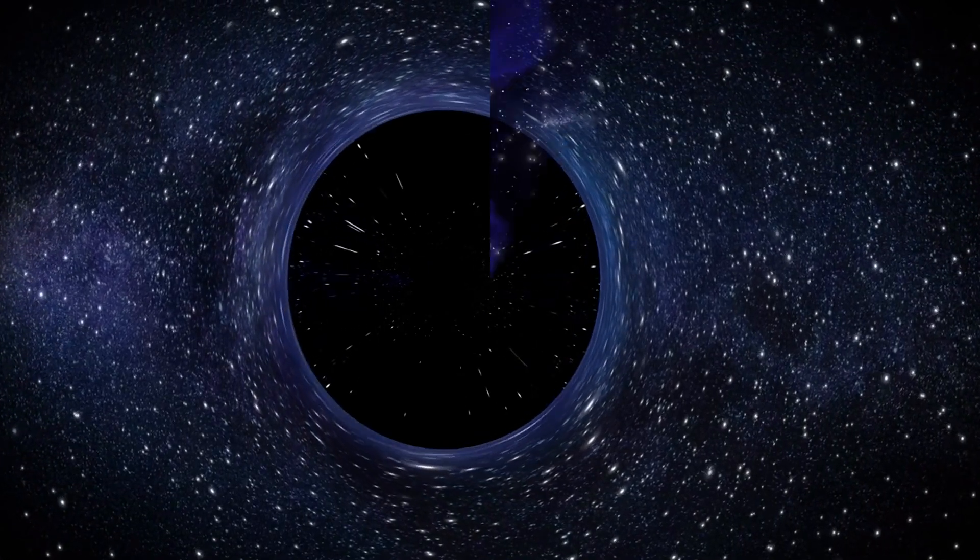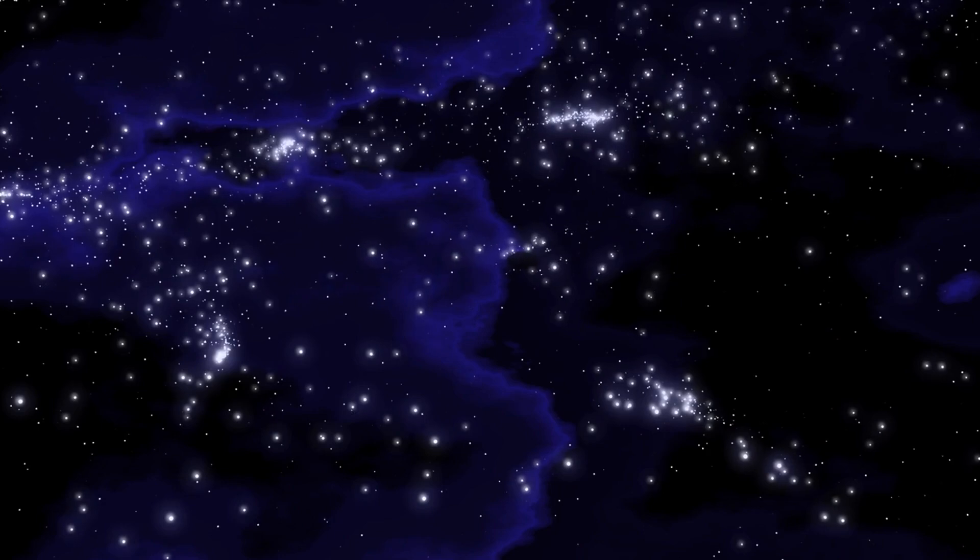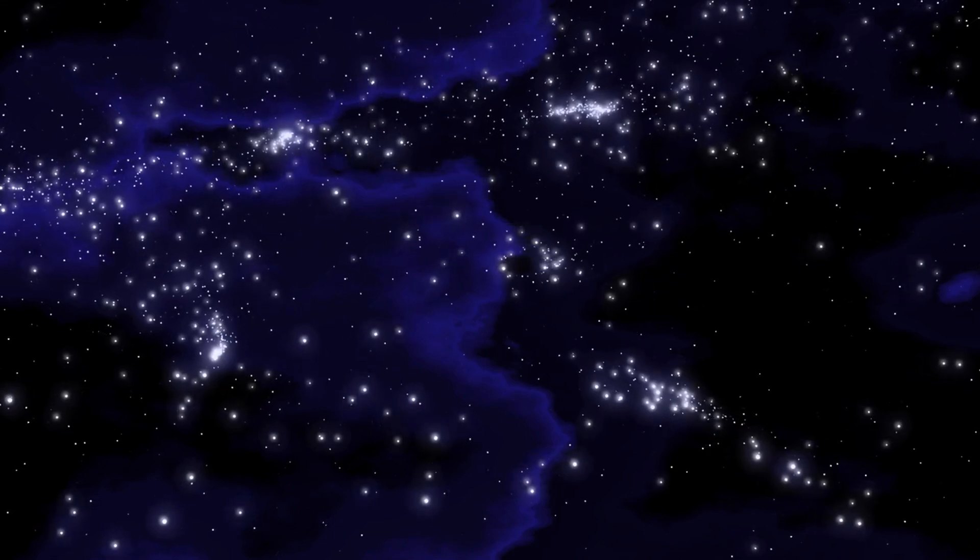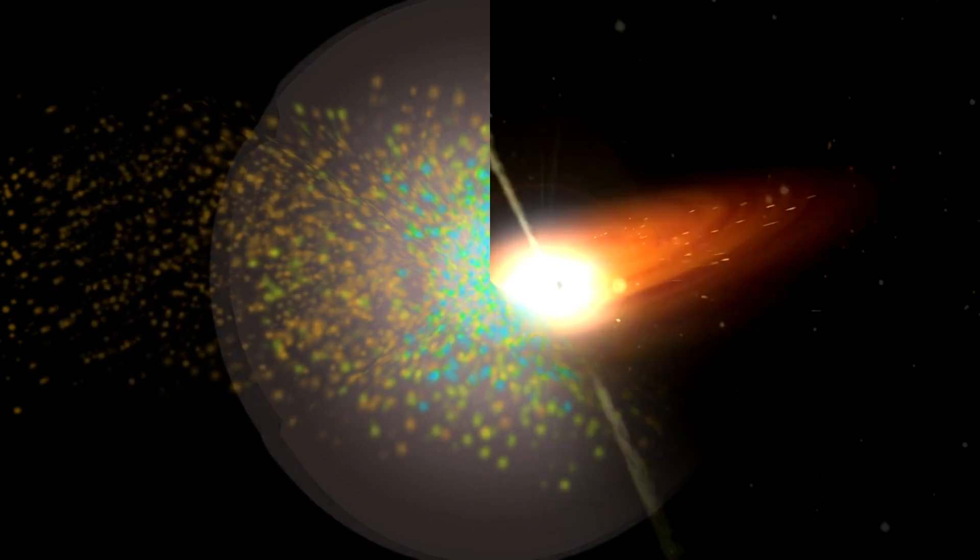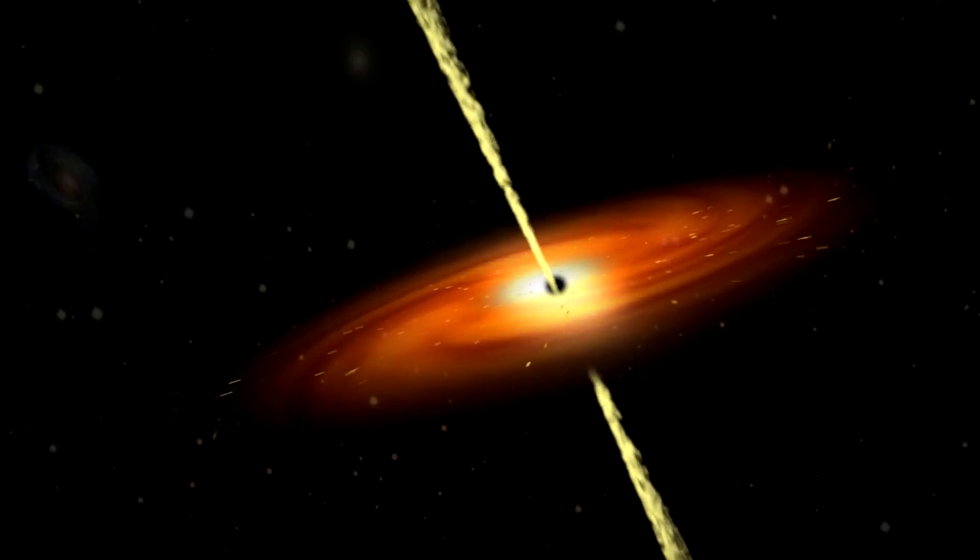Black holes are classified by their mass: stellar mass black holes, which form from stellar collapses; supermassive black holes, which reside at the centers of galaxies; and intermediate mass black holes, which are hypothesized to exist but remain elusive. A black hole formed from Betelgeuse would be a stellar mass black hole, significantly impacting its surrounding space by pulling in nearby matter and influencing the orbits of nearby stars and gas.